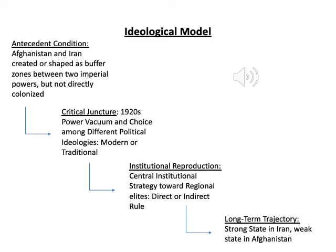And then the long-term trajectory that results from this institutional reproduction is that you get a strong centralized state in Iran. In Afghanistan, you get a patchwork state that is strong in some areas and weak in others.